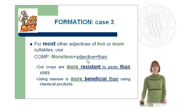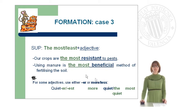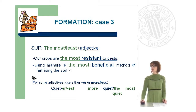For case three, for most other adjectives of two or more syllables, we use 'more or less' plus the adjective plus 'than' for the comparative. For example: 'Our crops are more resistant to pests than yours', or 'Using manure is more beneficial than using chemical products.' For the superlative, we use 'the most' or 'the least' plus the adjective. For example: 'Our crops are the most resistant to pests', or 'Using manure is the most beneficial method of fertilizing the soil.'